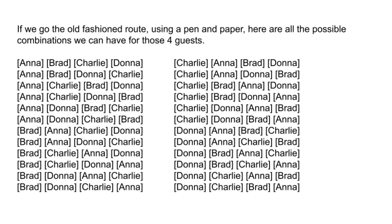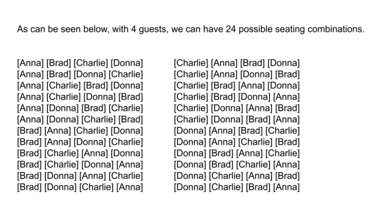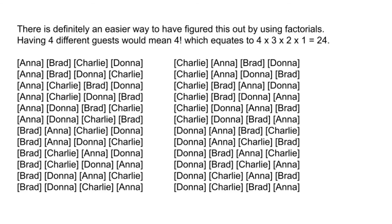If we go the old-fashioned route using pen and paper, here are all the possible combinations we can have for those 4 guests. As can be seen, with 4 guests we can have 24 possible seating combinations. There's definitely an easier way to figure this out using factorials — 4 factorial equals 4 times 3 times 2 times 1, which equals 24.